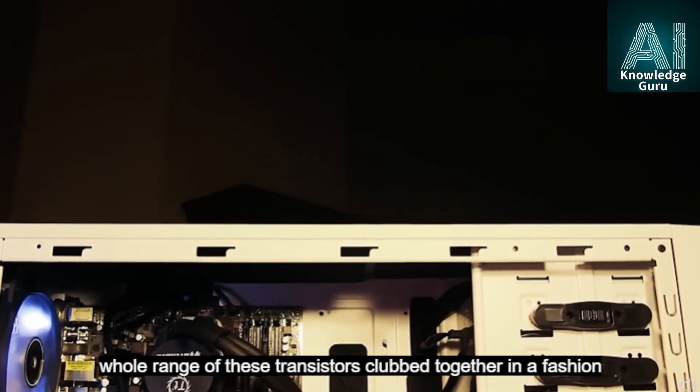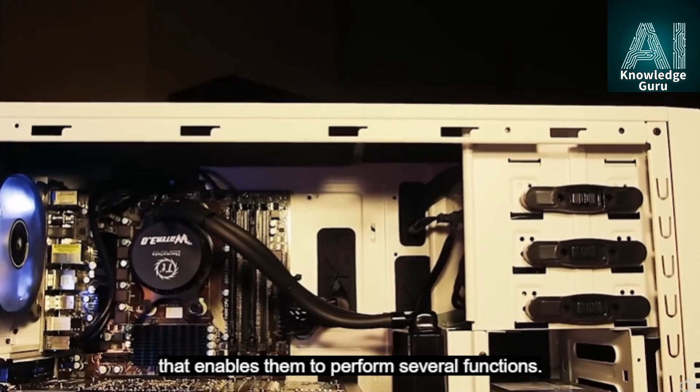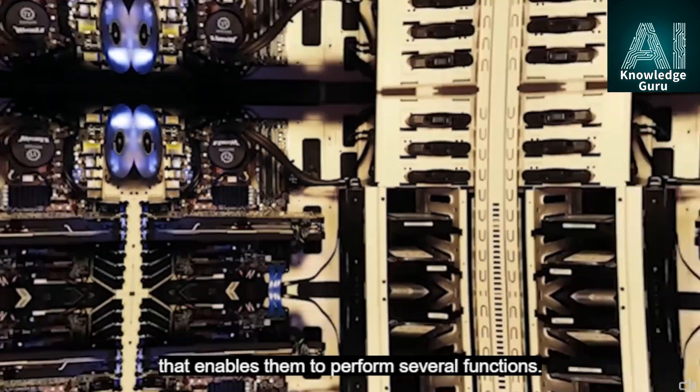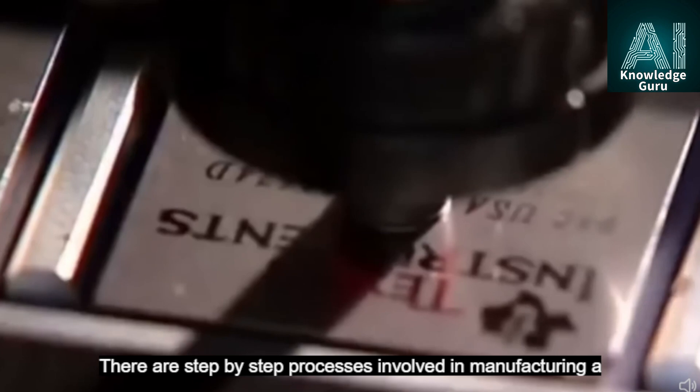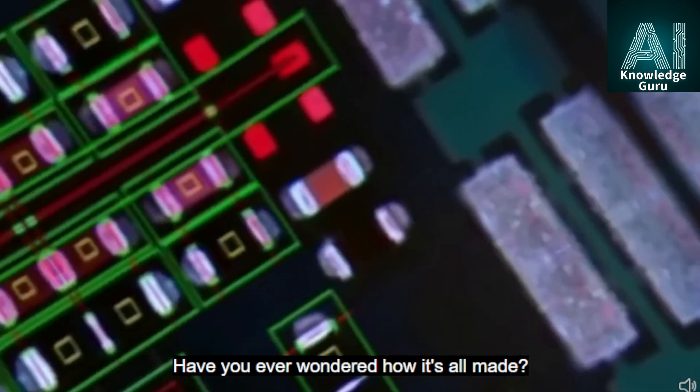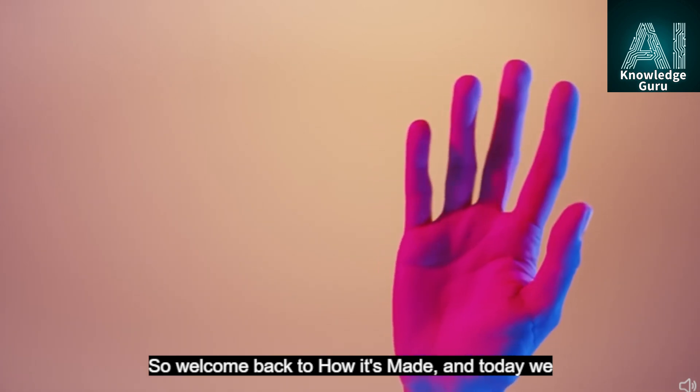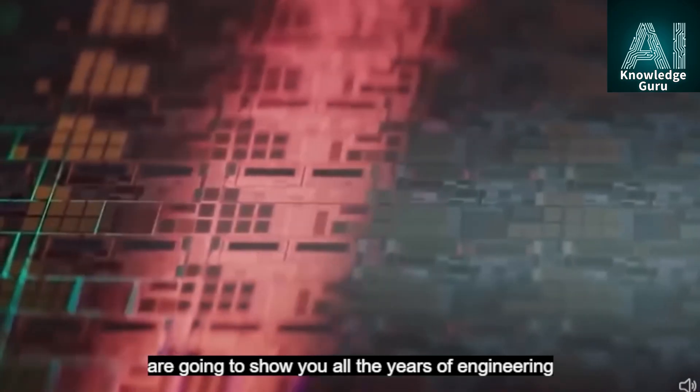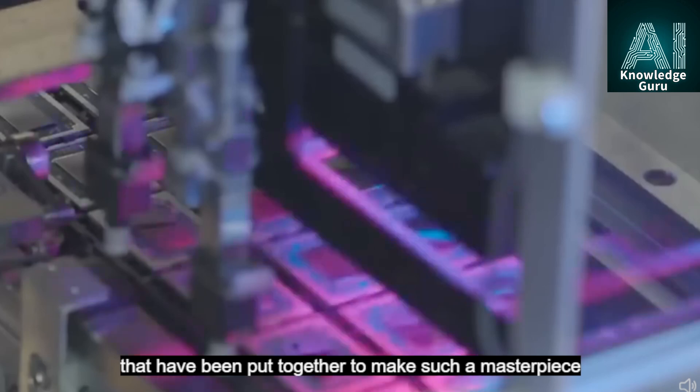The insides of CPUs exhibit a whole range of transistors clubbed together in a fashion that enables them to perform several functions. There are step-by-step processes involved in manufacturing a CPU. Welcome back to How It's Made and today we are going to show you all the years of engineering that have been put together to make such a masterpiece of computer processes.